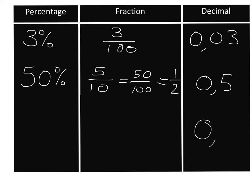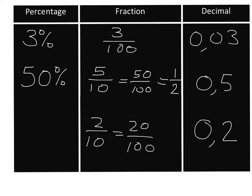Try for yourself: write 0.2 as a percentage by first putting it into fraction form, then also write that fraction in its simplest form. You should have said 0.2 is two tenths, which is 20 over 100, so it's 20 percent. Then to write it in simplest form, divide the top and bottom by two to get one over five. So 20 percent is the same as one fifth, and the same as 0.2.